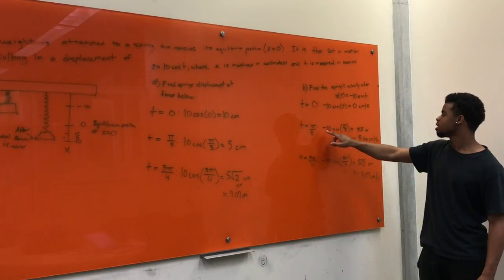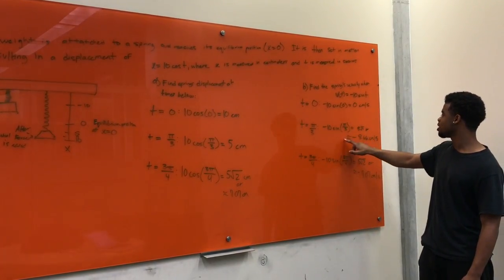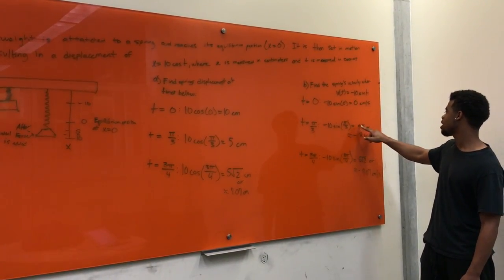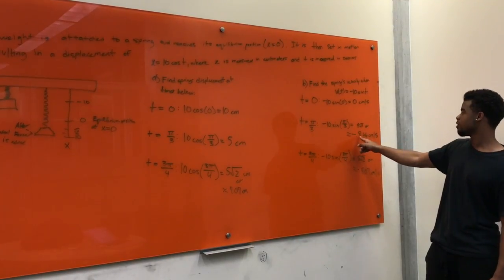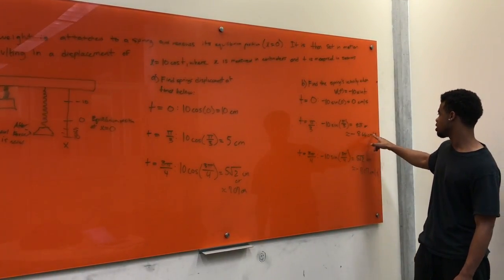Once we got pi over three, we got negative 10 sine of pi over three, which equals to negative five square root of three, or negative 8.66 centimeters per second.